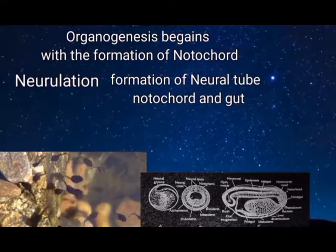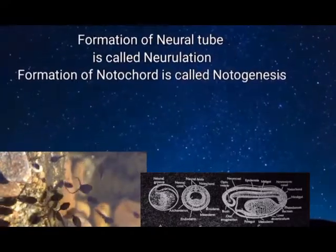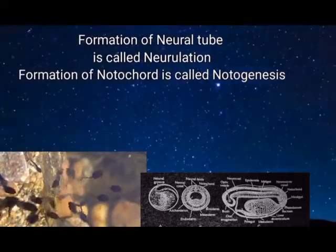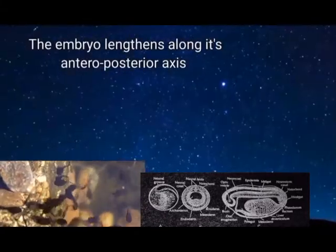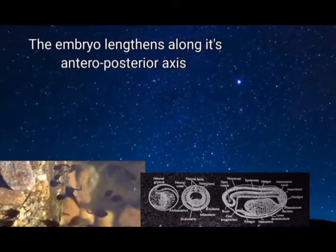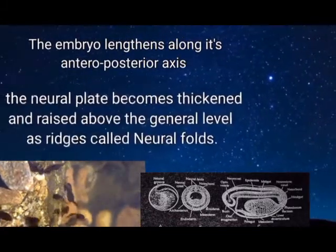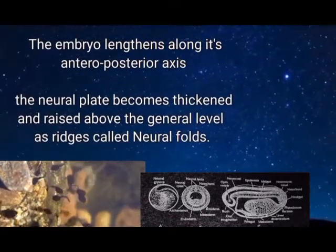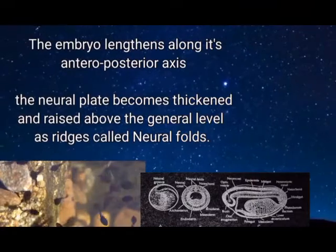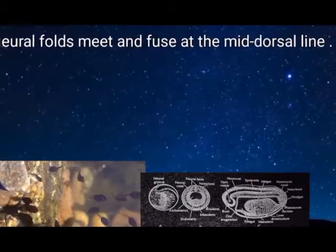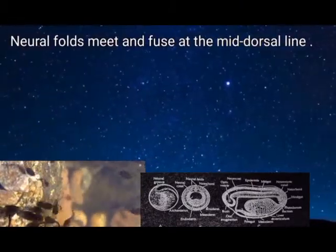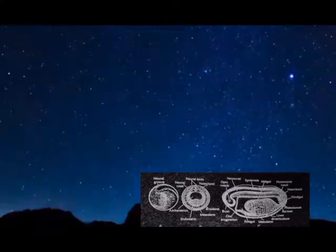Organogenesis begins with the formation of the notochord. The next stage is neurulation, which comprises the formation of the neural tube, notochord, and gut. The formation of the neural tube is known as neurulation and that of the notochord is known as notogenesis. The embryo increases in length along its anterior-posterior axis, and the neural plate becomes thickened and raised above the general level as ridges called neural folds. Neural folds meet and fuse at the mid-dorsal line.